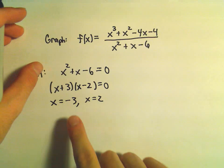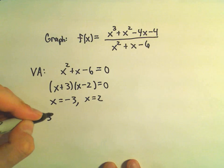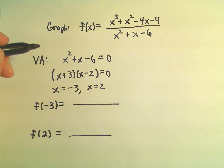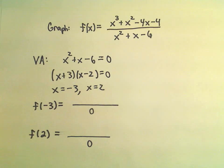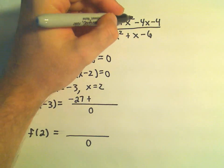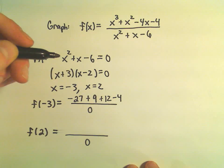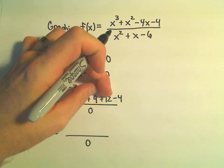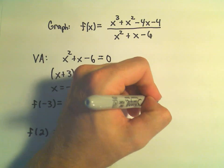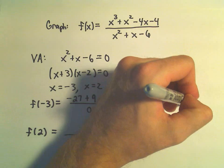This doesn't necessarily mean we have vertical asymptotes at negative 3 and 2 — it depends on whether we also get 0 from the numerator. Plugging negative 3 into the numerator: negative 3 cubed is negative 27, negative 3 squared is positive 9, negative 3 times negative 4 is positive 12, minus 4. That's negative 27 plus 21, which is negative 6, minus 4, giving us negative 10 over 0. Since we get something non-zero over 0, x equals negative 3 is a vertical asymptote.